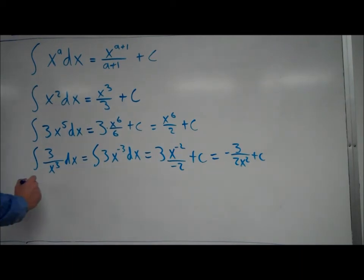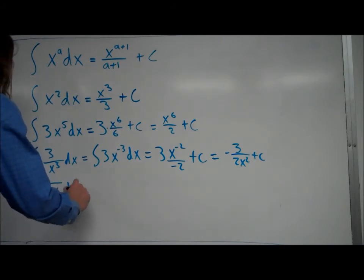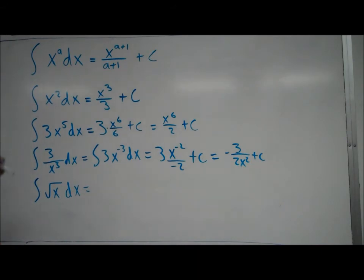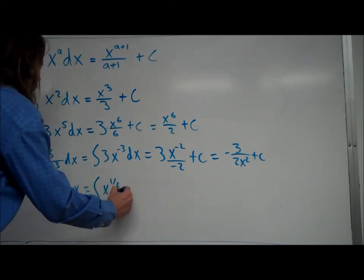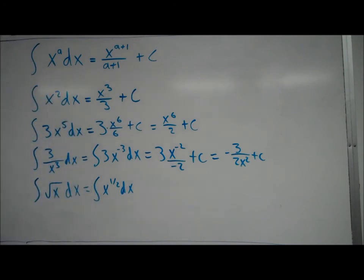Let's take a look at another example here. Say you had square root of x dx, so in this case right here, again, it doesn't look like a power rule right now, but you can just change the square root of x to x to the 1 half, and now it is perfectly in the power rule, it looks like it's going to work out for us,